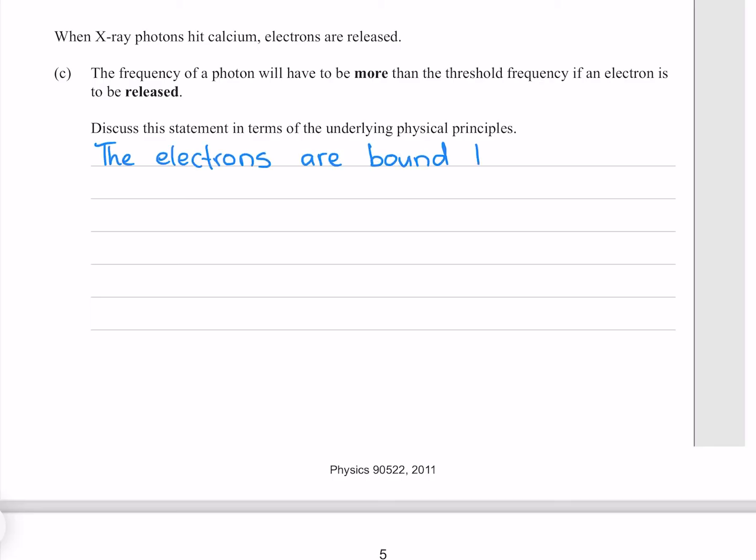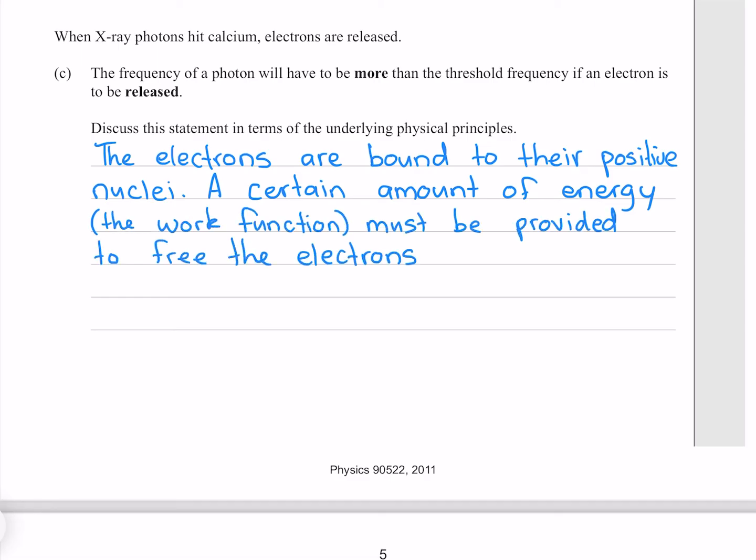The electrons are bound to their positive nuclei. A certain amount of energy, the work function, must be provided to free the electrons. The frequency of a photon with this energy is called the threshold frequency.